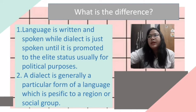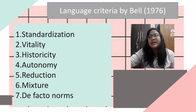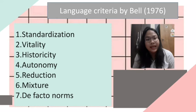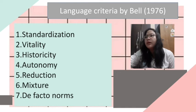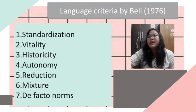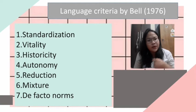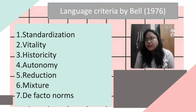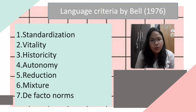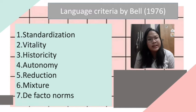There is another expert, Bell, who stated seven language criteria: standardization, vitality, historicity, autonomy, reduction, mixture, and de facto norms. If a language consists of all seven criteria, we can call it a language. But if it is missing one or two criteria, we cannot call it a language — we would call it a dialect instead.